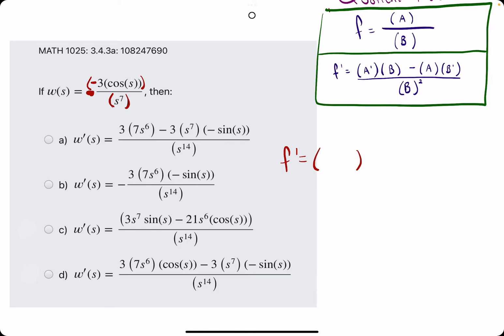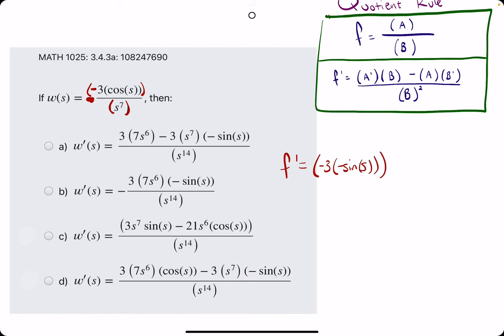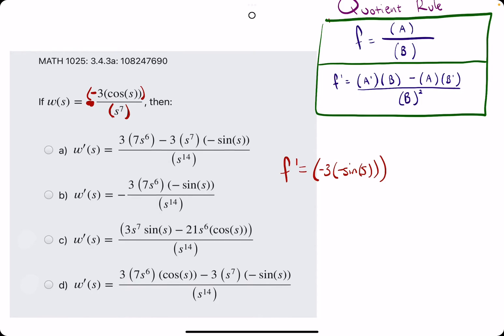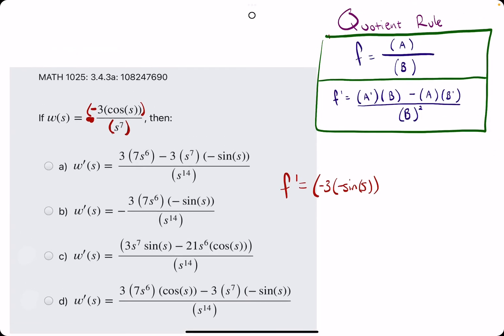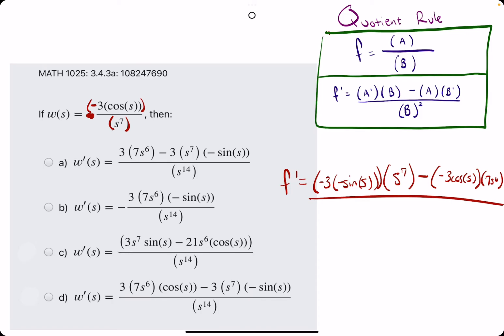Derivative of the numerator A is negative 3. And then the derivative of cosine is negative sine. So if we have negative 3, negative sine of S, let me just make sure. I might leave it like this for now. We have negative 3, negative sine of S. And then now we want B, so B is S to the 7th. Then we want minus. Then we want A, so negative 3 cosine of S. And then we want B prime, the derivative of S to the 7th, which is 7S to the 6th.